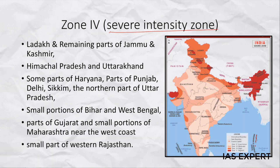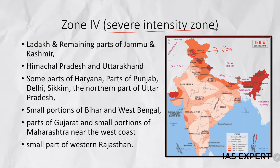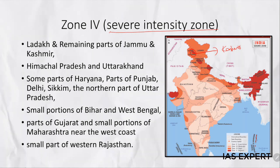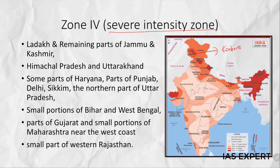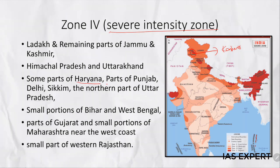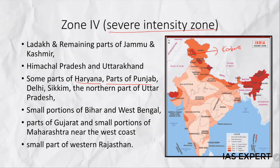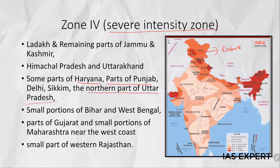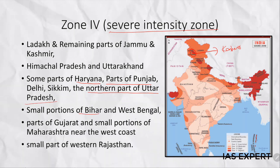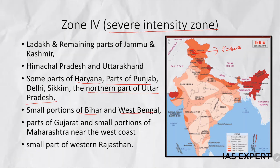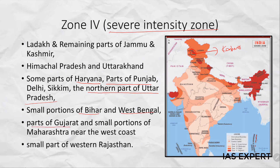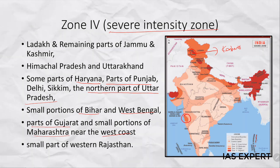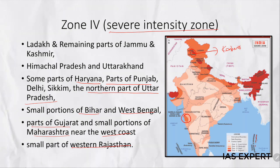Coming to Zone 4 — the severe intensity zone. This includes Ladakh and the remaining parts of Jammu and Kashmir except the Kashmir Valley; Himachal Pradesh and Uttarakhand; some parts of Haryana; parts of Punjab; Delhi; Sikkim; northern part of Uttar Pradesh; a small portion of Bihar; West Bengal; parts of Gujarat; a small portion of Maharashtra near the west coast; and some parts of western Rajasthan.